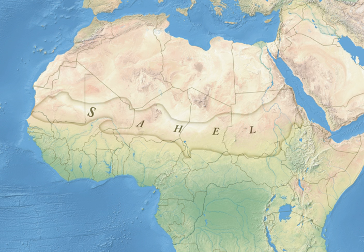Traditionally, most of the people in the Sahel have been semi-nomads, farming and raising livestock in a system of transhumance, which is probably the most sustainable way of utilizing the Sahel. The difference between the dry north with higher levels of soil nutrients and the wetter south with more vegetation is utilized by having herds graze on high-quality feed in the north during the wet season, and trek several hundred kilometres to the south to graze on more abundant but less nutritious feed during the dry period.